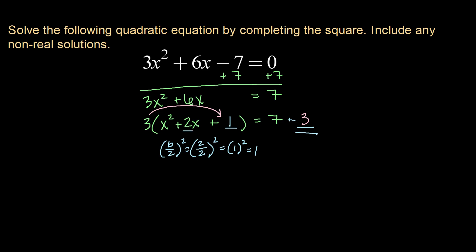So now, factoring through our middle value, our left-hand side becomes 3 times our perfect square trinomial, which factors to x plus 1 squared. And our right-hand side, 7 plus 3, becomes 10.